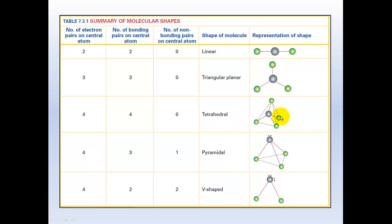Tetrahedral, which form at 109.5 degrees away from each other; pyramidal, which is the tetrahedral with the lone pair of electrons; and v-shaped, which is the tetrahedral with two lone pairs of electrons giving it that v-shape.